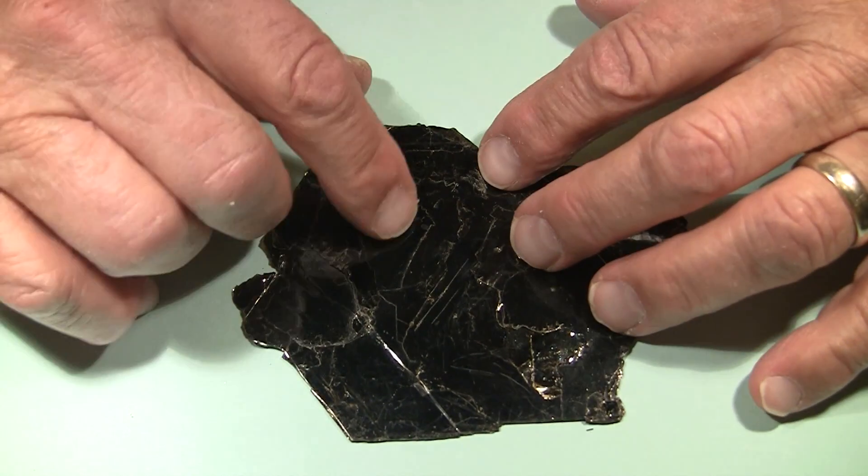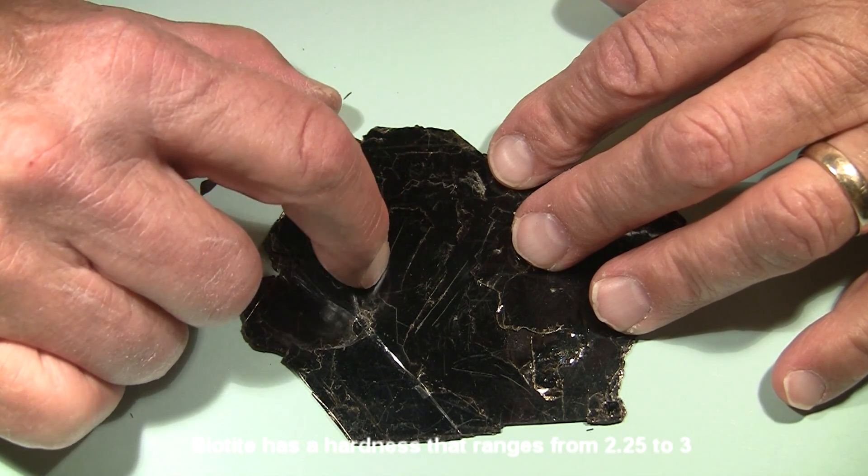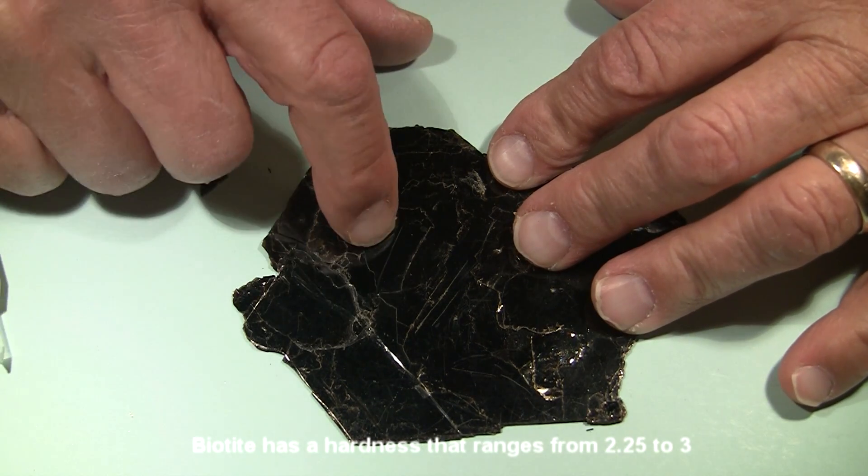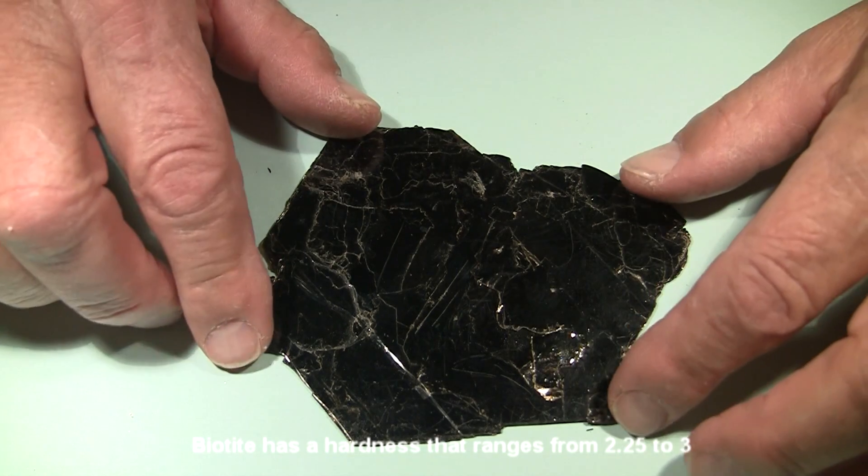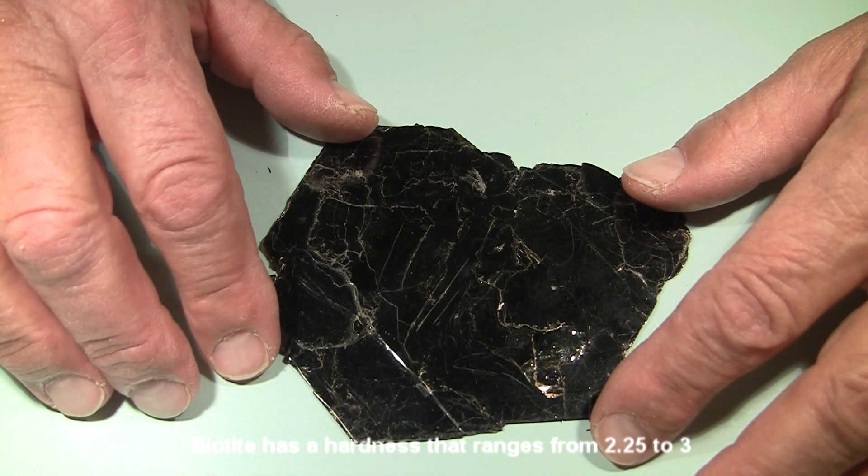In fact, let's try the fingernail. Try another spot right here. And it leaves that scratch. So this mica, biotite mica, has a hardness of less than 2.5.